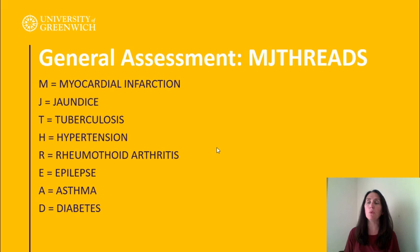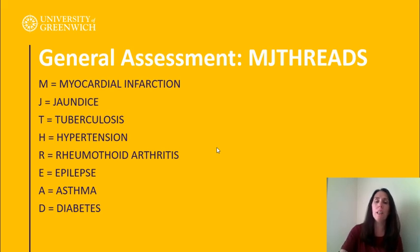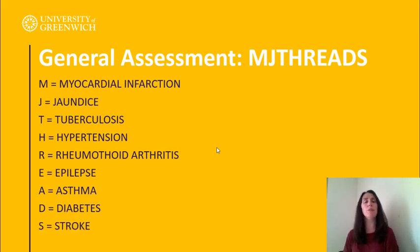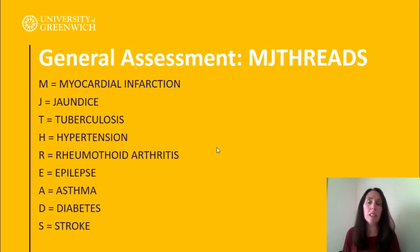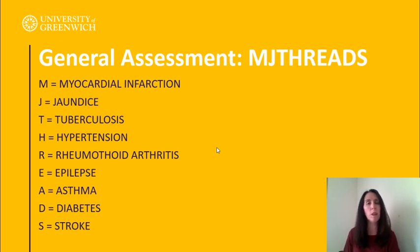If a diabetic patient has glucose up at 20 and shouldn't be, don't just think they've had too many donuts — it could be really sinister. S is stroke — figuring out anything with the neurological system, four-limb ability, or new versus old deficits. MJ THREADS is really really helpful.